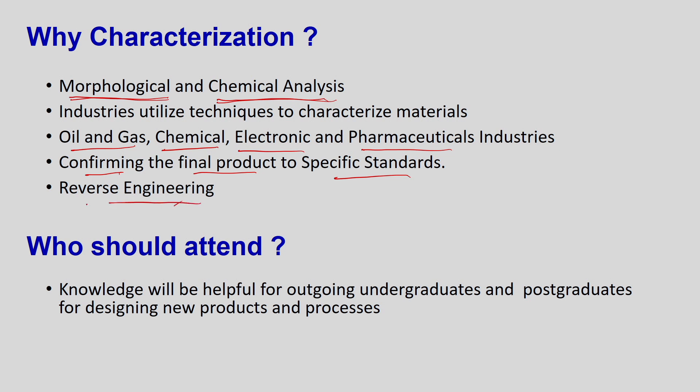Reverse engineering — what does this mean? It means you have prepared a material, and now you want to see whether it conforms to the required standards. If not, you go back, perform the characterization again, and come back to verify whether it satisfies the specific standards. This iterative process is central to quality control in engineering.